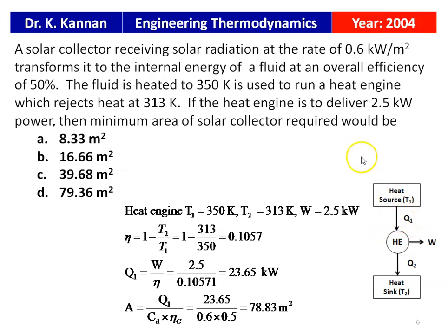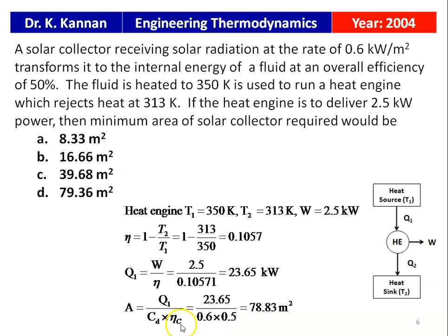We have to calculate the area of the solar panel: A = Q_solar / (collector_density × η_collector). The collector density is 0.6 kW/m² and the collector efficiency is 0.5. So A = 23.65 / (0.6 × 0.5) = 78.83 m². The closest available option is D: 79.36 m².